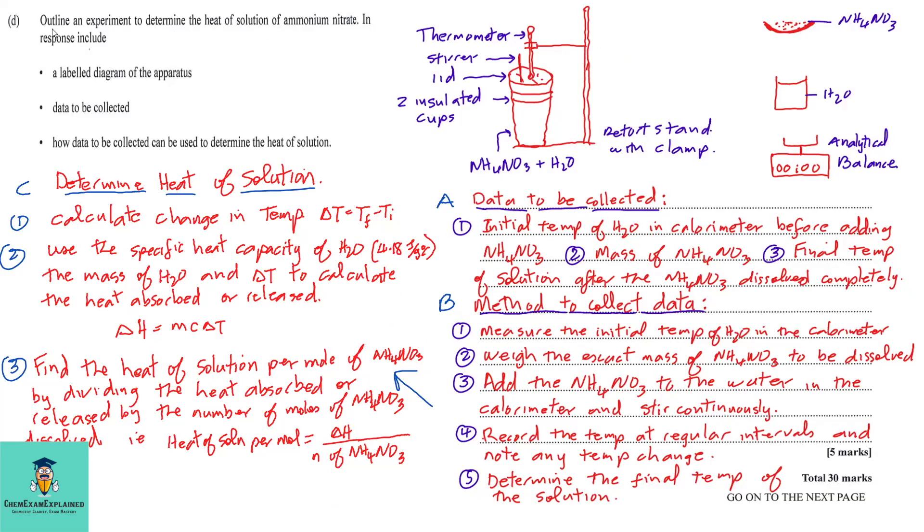Part D. Outline an experiment to determine the heat of solution of ammonium nitrate. In response include a labelled diagram of the apparatus, data to be collected, and how the data to be collected can be used to determine the heat of solution.